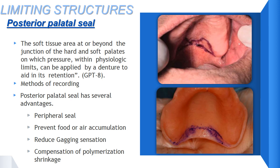There are many ways of recording the posterior palatal seal. Clinically, it can be done by the Valsalva maneuver or with the fluid wax technique. In the laboratory technique, it can be prepared by palatal scraping. Advantages of a properly established posterior palatal seal include: a complete peripheral seal can be achieved; prevention of food or air accumulation from the posterior aspect of the maxillary denture; reduction of gagging sensation because soft palate interferences are avoided; and compensation for polymerization shrinkage.